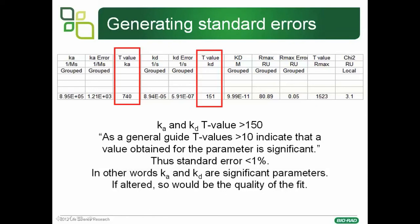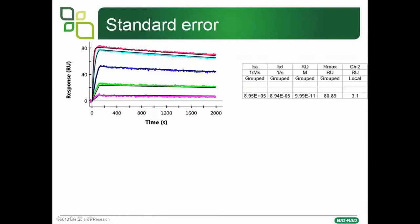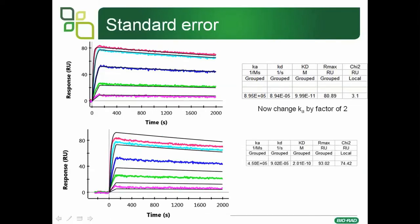To give an example of what parameter significance means: in our ongoing example, to illustrate that this parameter is significant, we change Ka by a factor of 2 — Ka is now halved. You can see visually that the data no longer fits, i.e., the fit lines do not go through the middle of the experimental data. The chi-squared has jumped to 74, which is almost the same as Rmax and no longer meets our criteria of being only a few percent of Rmax.